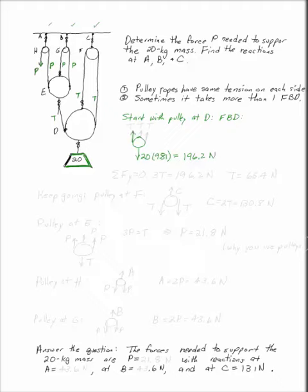I have three tensions pulling up. By sum of forces equal to zero for this pulley, I have 3T equals 196.2 Newtons. So the tension in the second rope is 65.4 Newtons.